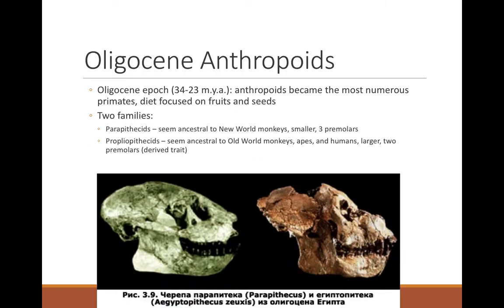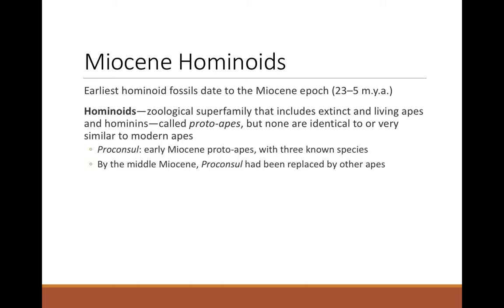During the Oligocene we become really focused on fruit eating. The Parapithecids give rise to New World monkeys, and the Propliopithecids give rise to Old World monkeys. You can already see different snout shapes — one is more prognathous while the other ends more abruptly with a flatter face and nasal area. We see differences in dental formula and changes in snout shape, and at the end of the Oligocene we see the appearance of the first apes.